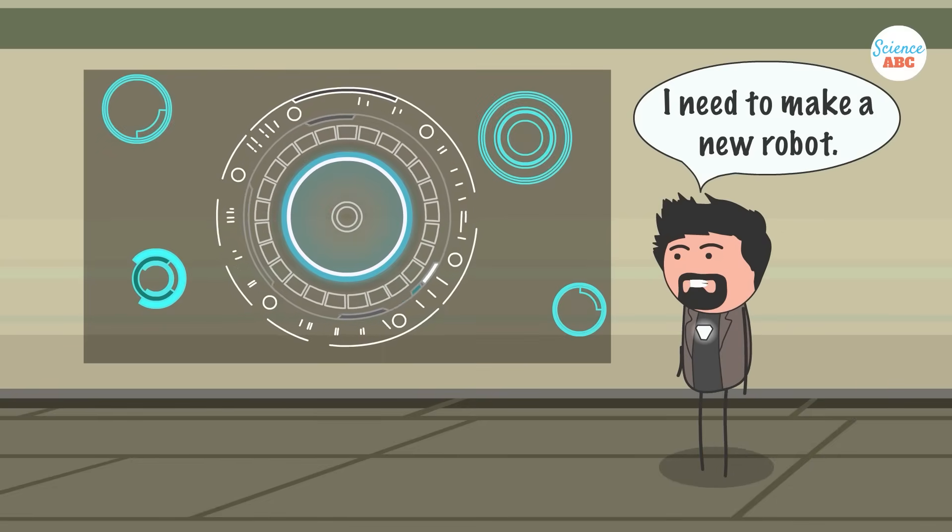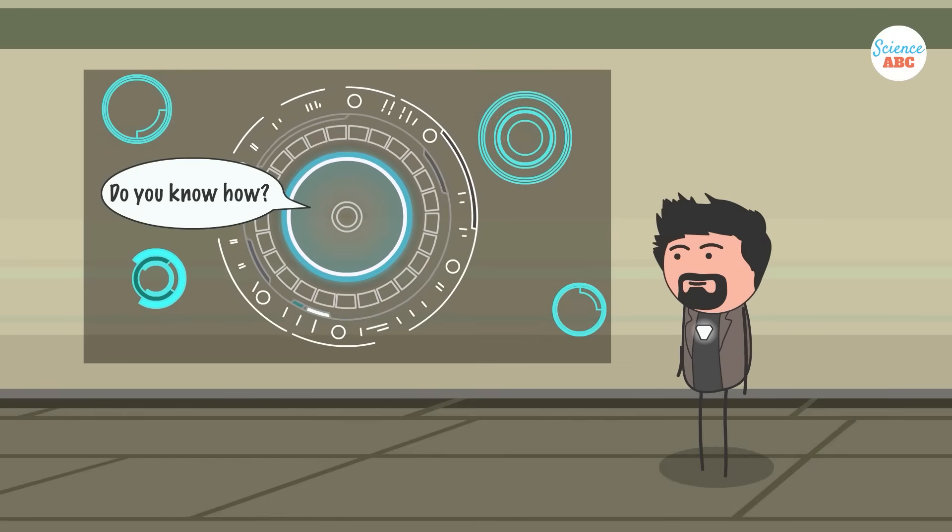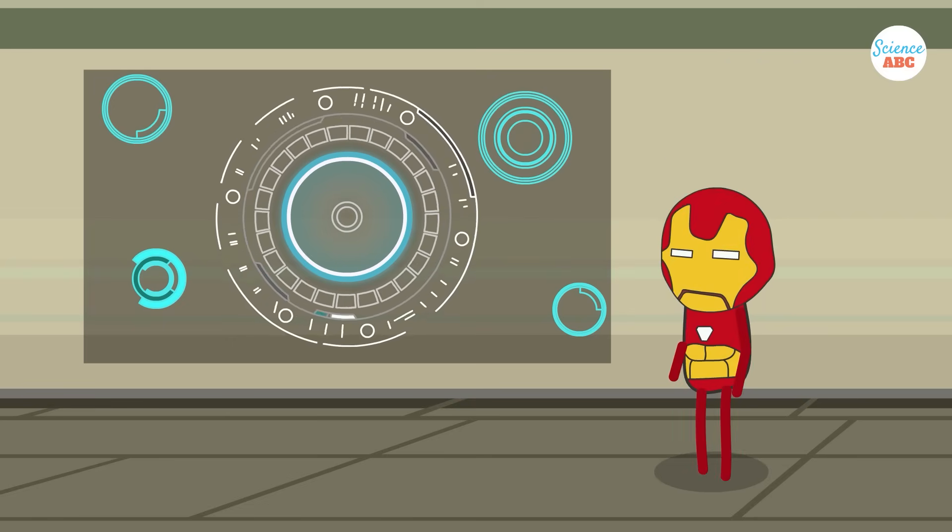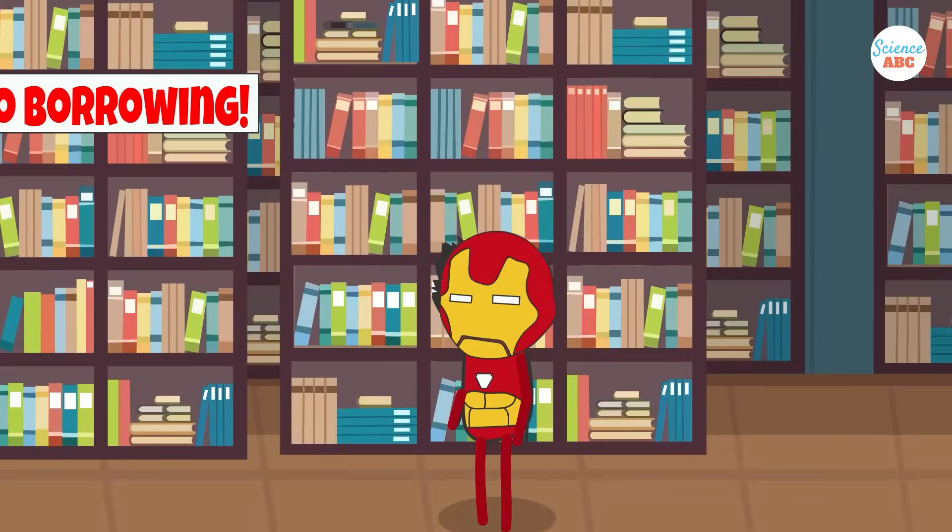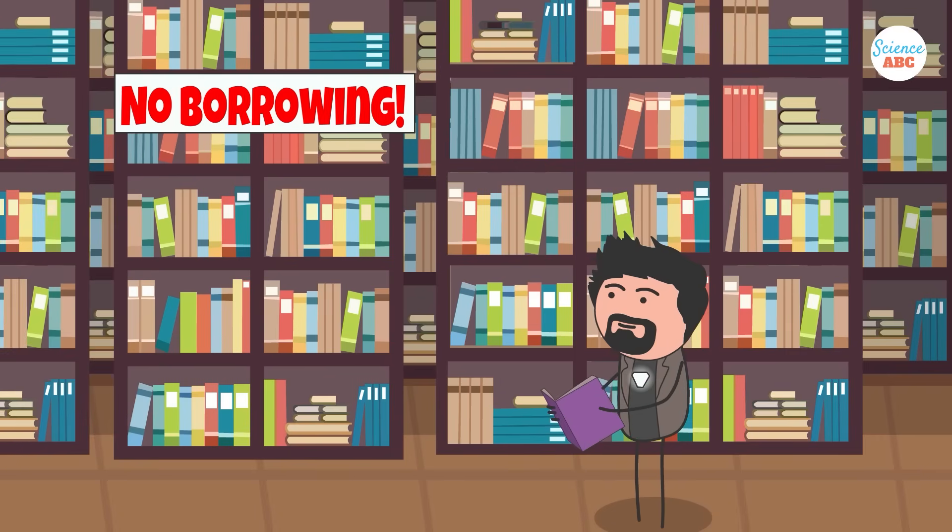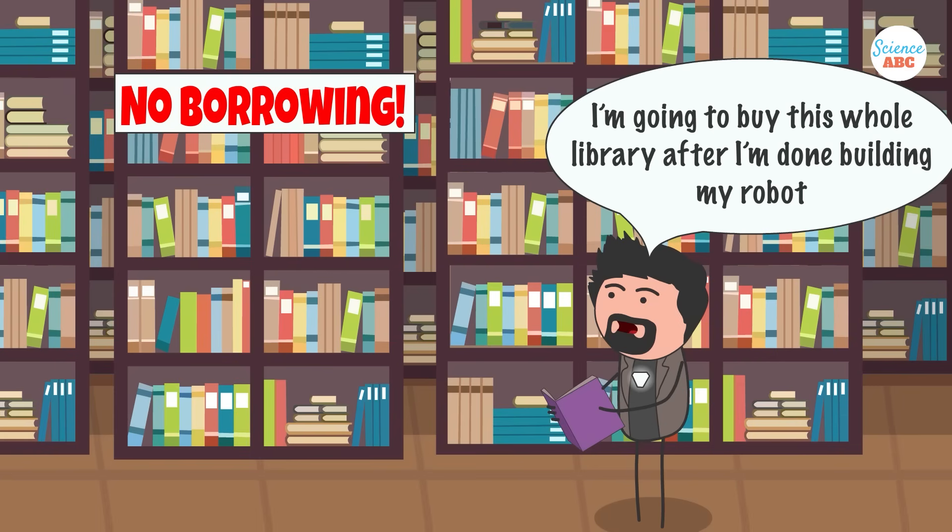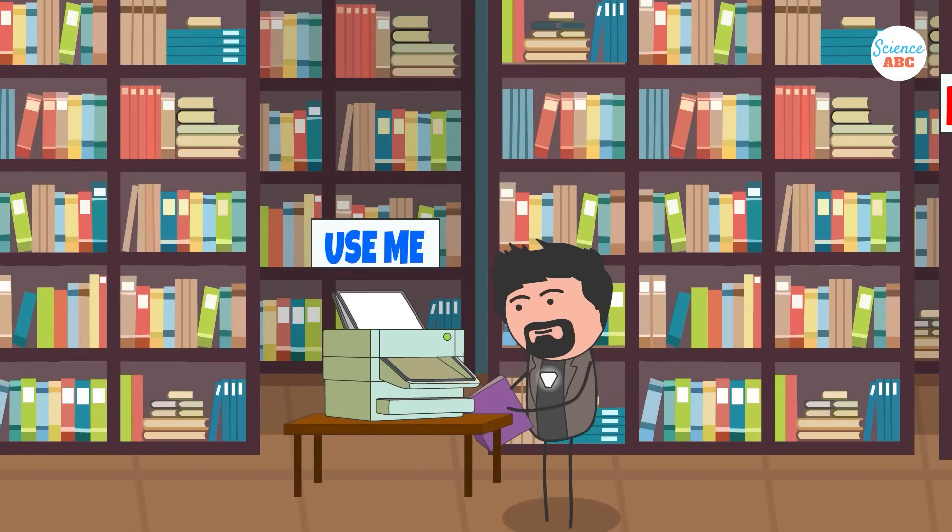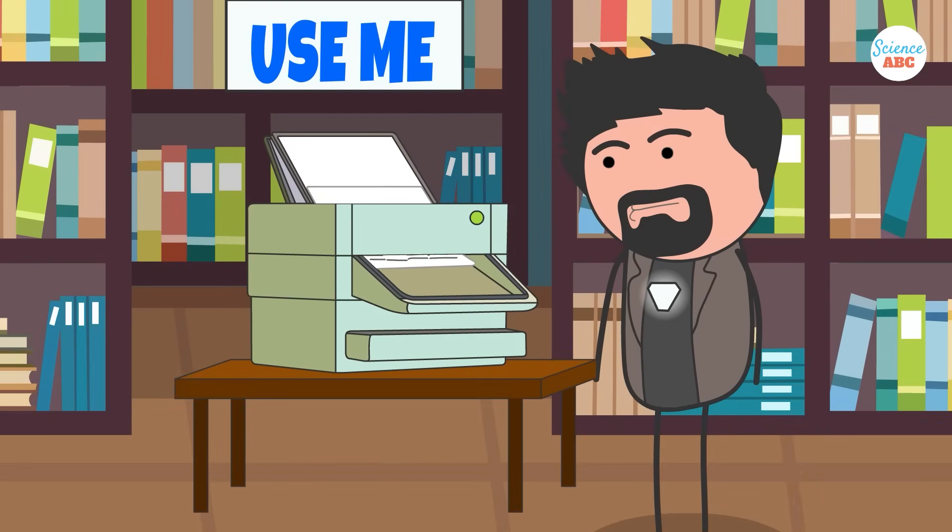Imagine that you want to build a robot. You don't know exactly how to do it, but there's a book in the library with instructions. You go to the library and find the book, but there's a problem. The library doesn't allow you to take the book out, and you can't bring the materials to build the robot into the library. So what do you do? You decide to scan and print parts of the book to take back home with you. Now you can build your robot.